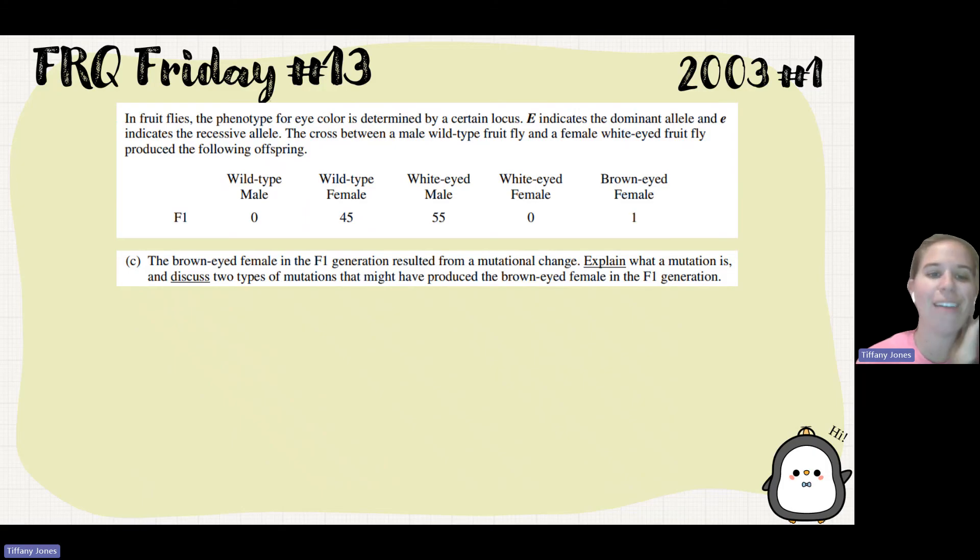So C says that the brown-eyed female is resulting from a mutational change. Explain what a mutation is and discuss two types of mutations that might have produced this. So mutation is just a change in the DNA. There's some type of change in your genetic material, and that change is going to lead to a difference in the protein. And that different protein then leads to a different physical characteristic.